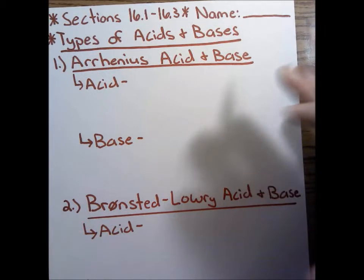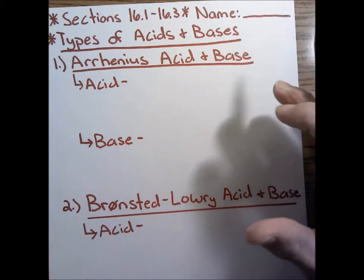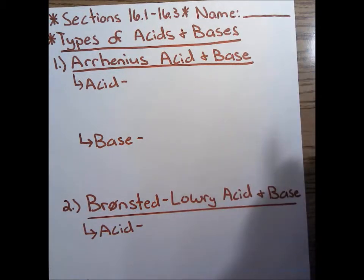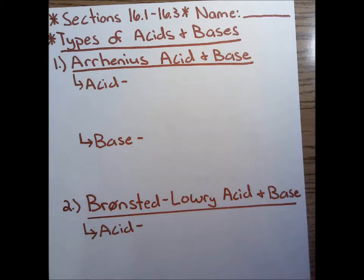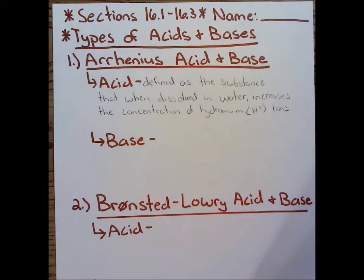We actually start with two different definitions of acids and bases — in total three, but we really concentrate on the second one. This first type is the Arrhenius acid and base definition. An Arrhenius acid is defined as a substance that, when dissolved in water, increases the concentration of hydronium or H+ ions.